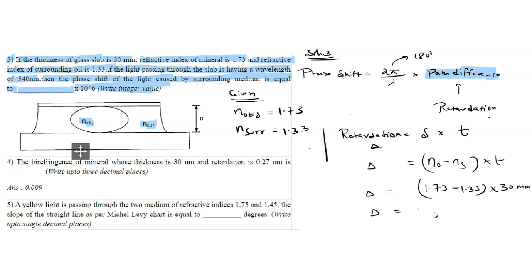Now we will put this in the formula because retardation and path difference are the same. Let's see what we get.